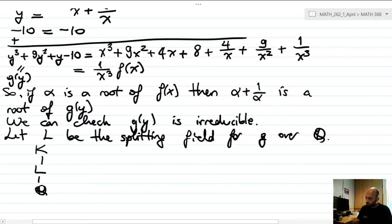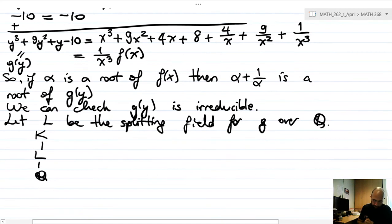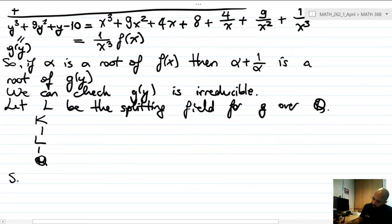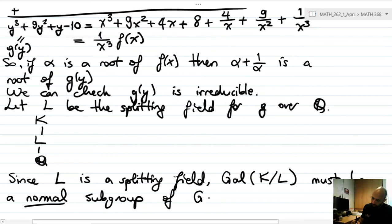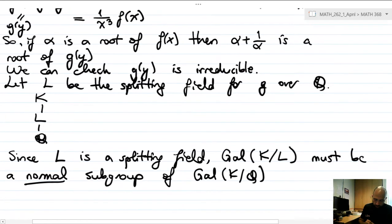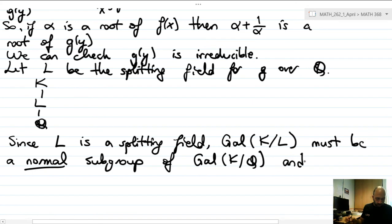Now what happens on the group side? Let's use the fundamental theorem of Galois theory here. Now since L itself is the splitting field of something, Gal(K/L) must be a normal subgroup of Gal(K/Q) by the fundamental theorem of Galois theory. And furthermore, we know this relation, right? So Gal(K/Q) quotient by the subgroup is isomorphic to Gal(L/Q).